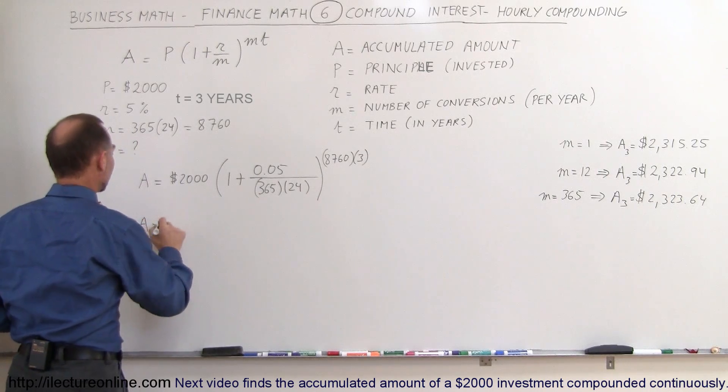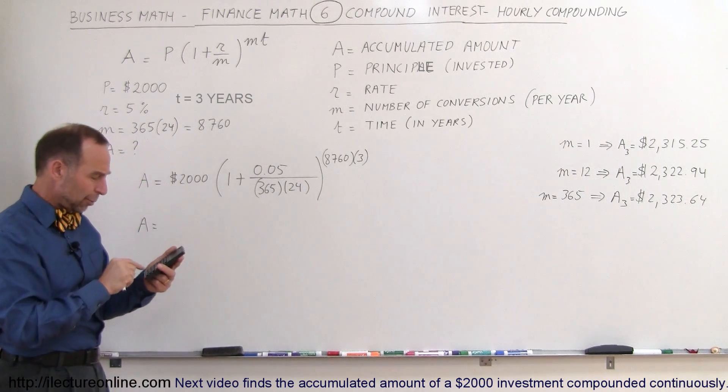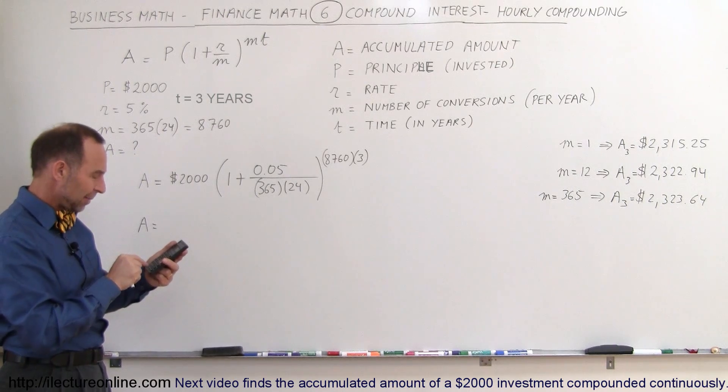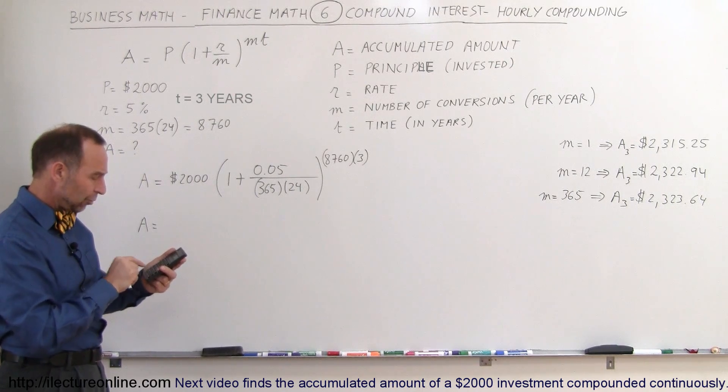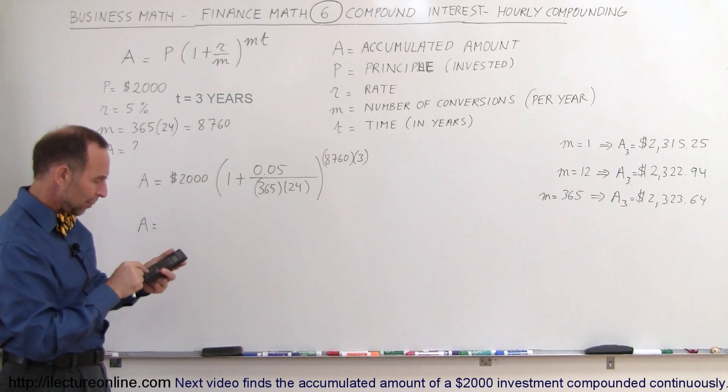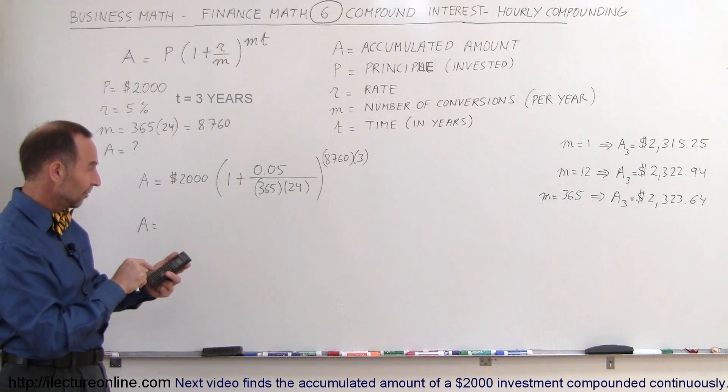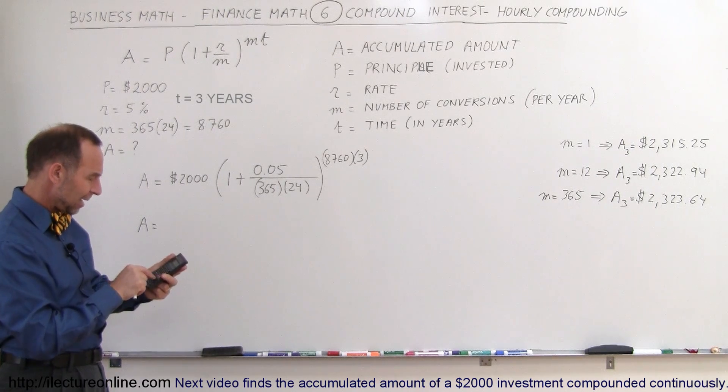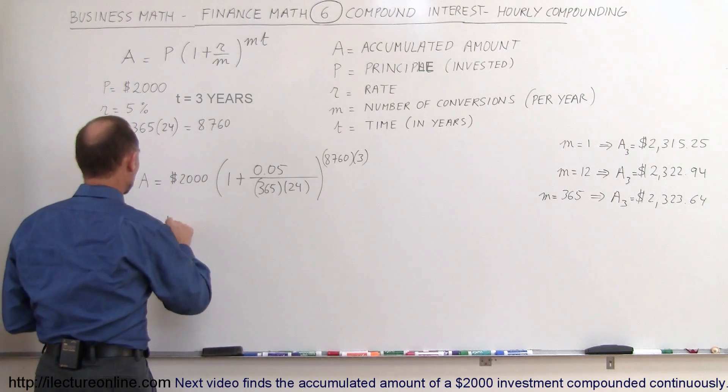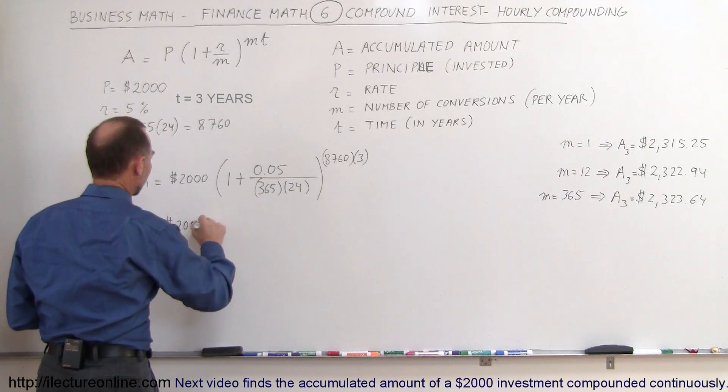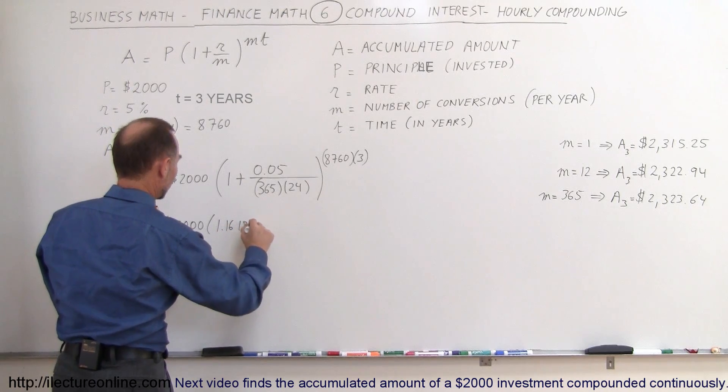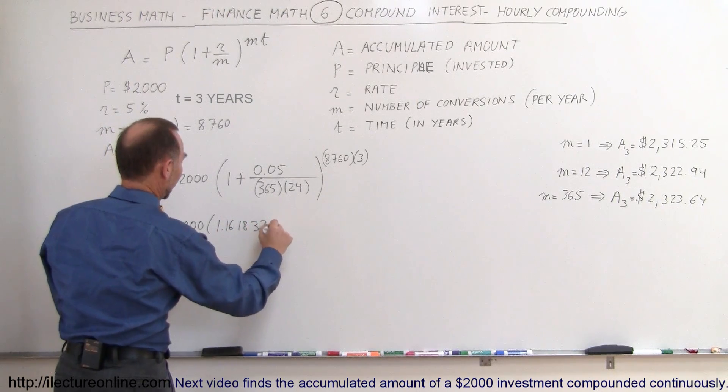The accumulated amount equals starting with 0.05 divided by 365 divided by 24, add that to 1 and take the whole thing and raise it to that exponent, x to the y, and we have 8,760 times 3. We end up with $2,000 times 1.161833667.